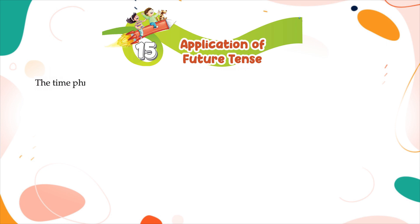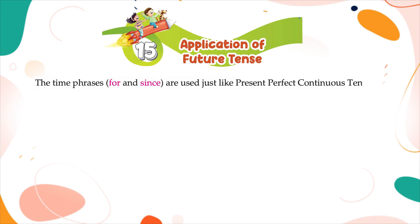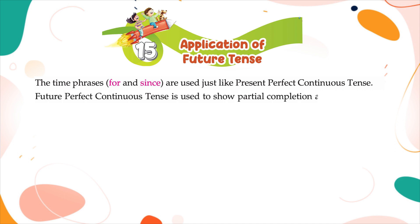The time phrases 'for' and 'since' are used just like in Present Perfect Continuous Tense. Future Perfect Continuous Tense is used to show partial completion and continuity of an action in the time to come.